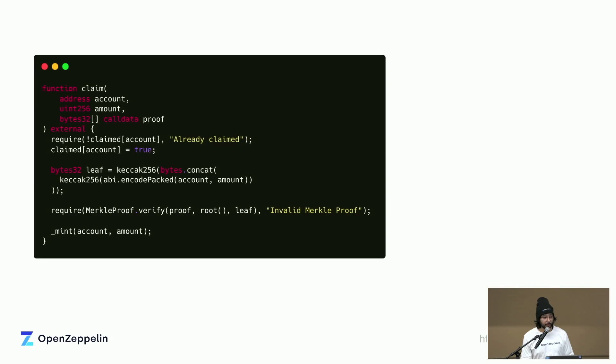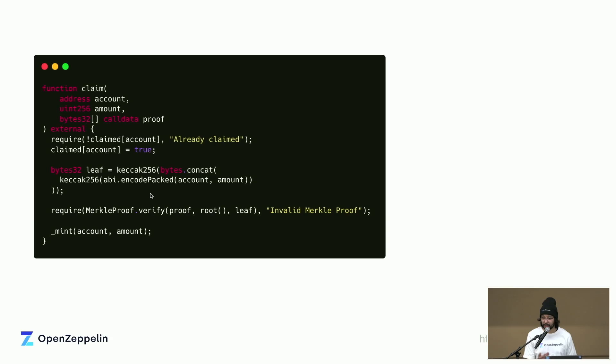What we recommend now is a small change to your claiming function: instead of hashing the leaf once, you double-hash it. As you can see, only the leaf calculation line changes. We use bytes concatenation instead of copying into memory — it's a simple trick to avoid an unnecessary memory copy. Once you have this leaf, you use it with the MerkleProof library exactly as before, with no other changes.